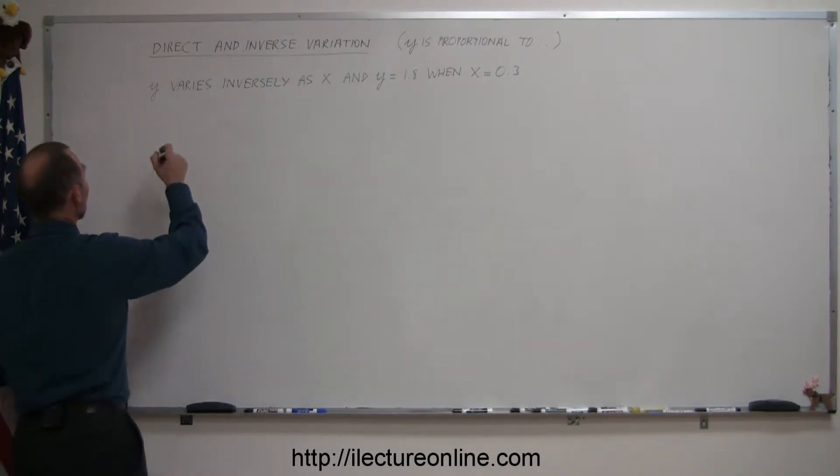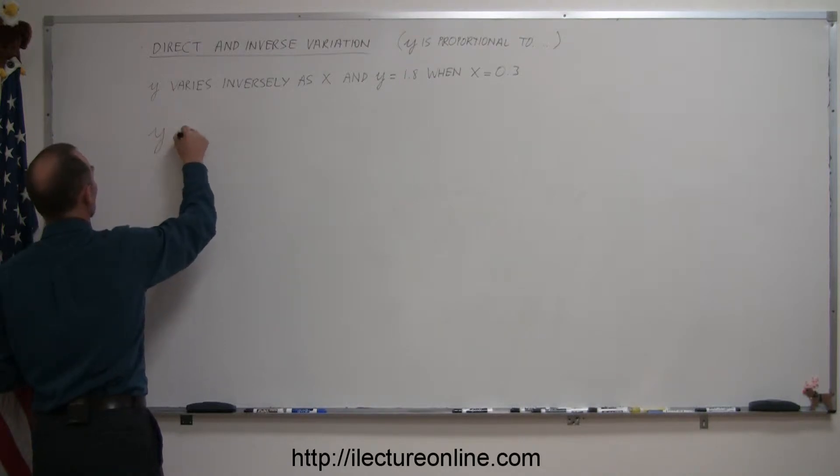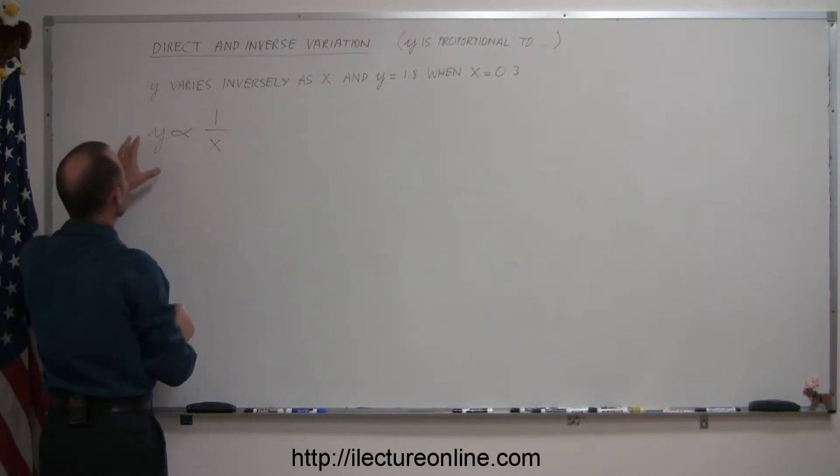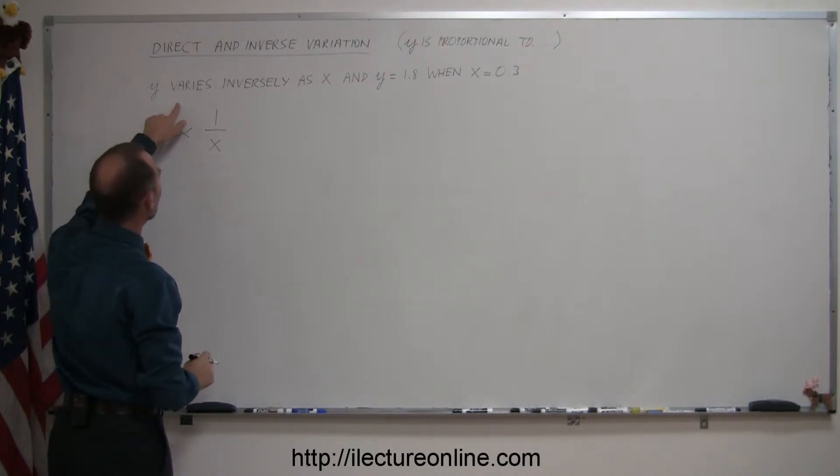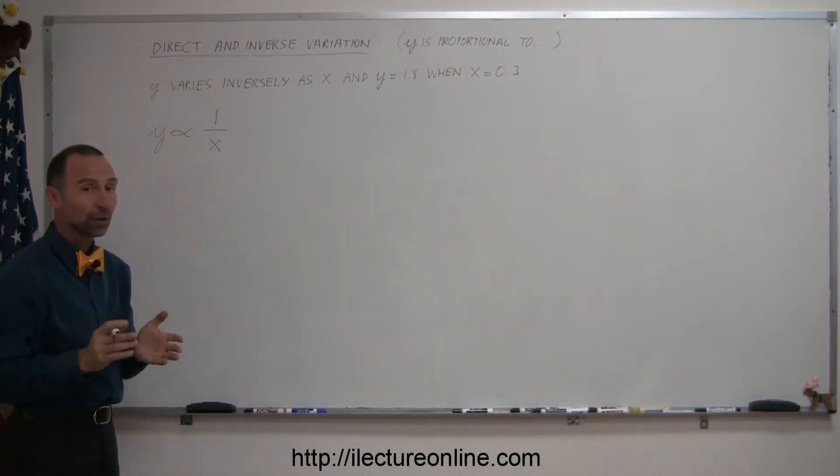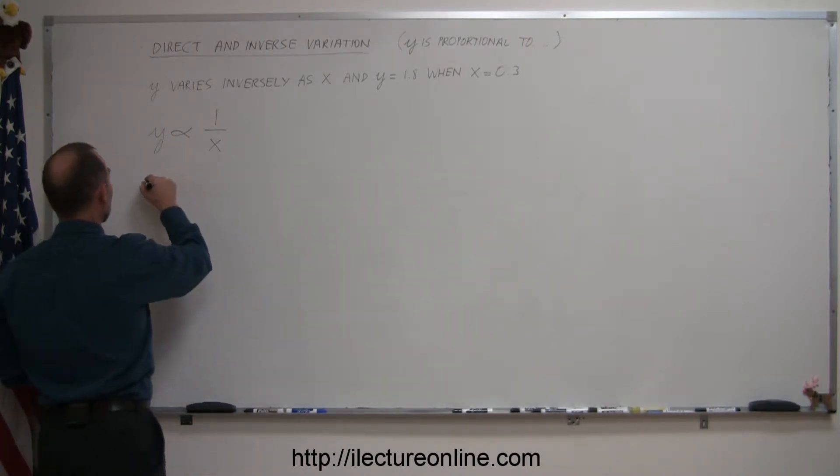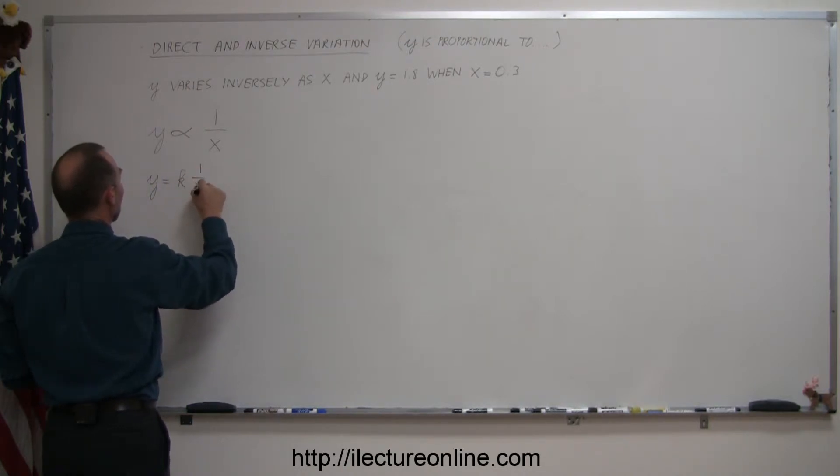All right, so we can write that y is proportional to 1 over x. What this means is that y varies inversely as the variable x, or y is proportional to the inverse of x. And to turn that into an equation we have to introduce a constant of proportionality, so y is equal to k times 1 over x.